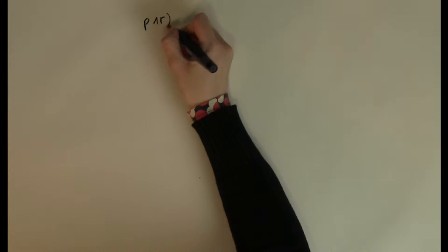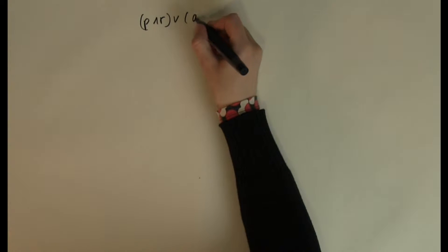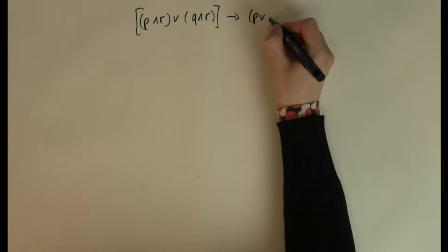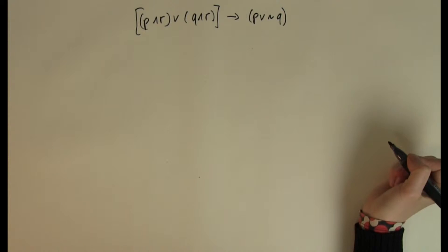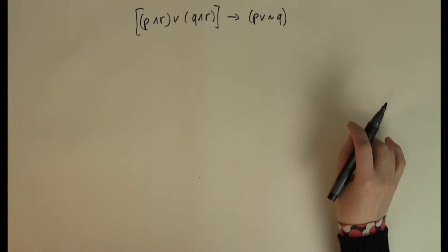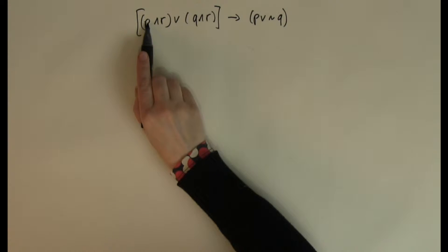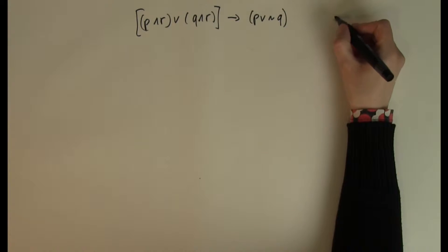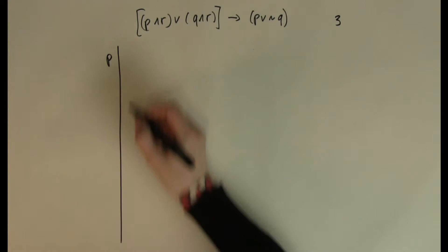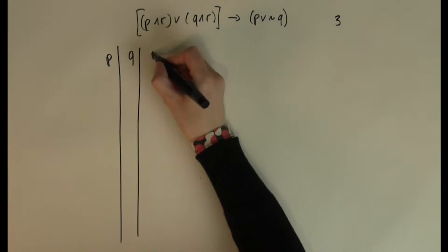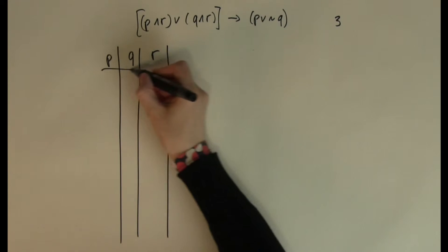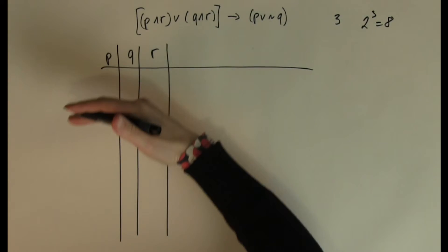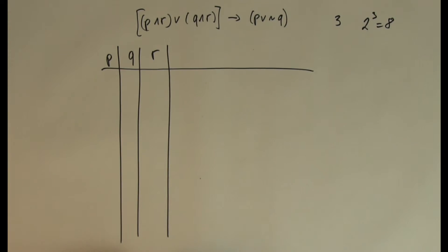The expression is: (P AND R) OR (Q AND R) IF THEN (P OR NOT Q). The first thing we want to establish is how many different inputs there are. There are altogether three different letters: P, Q, and R. Two to the three gives me eight, so I am going to have eight different input combinations, or eight different rows in the truth table.